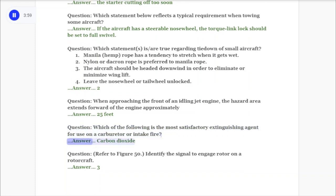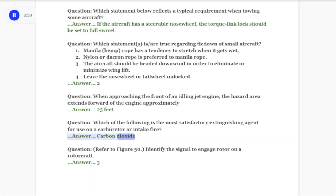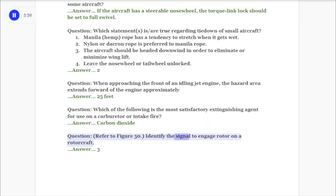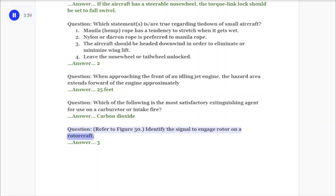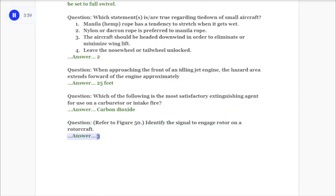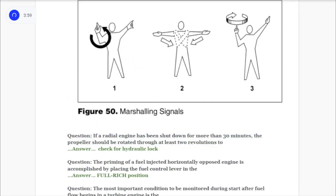Question: Refer to Figure 50. Identify the signal to engage rotor on a rotorcraft. Answer: Three. Question: If a radial engine has been shut down for more than 30 minutes, the propeller should be rotated through at least two revolutions to? Answer: Check for hydraulic lock.